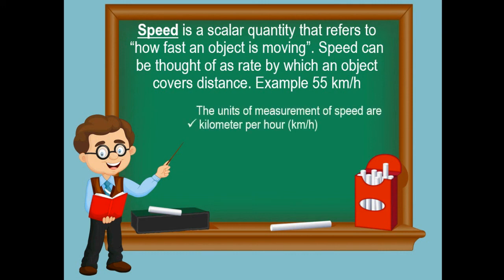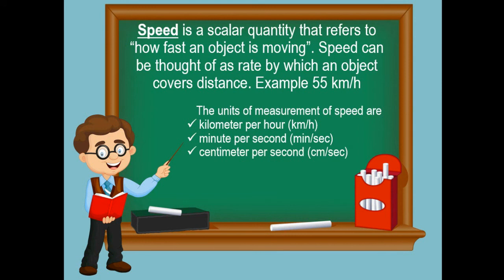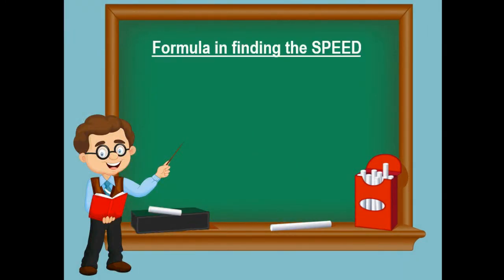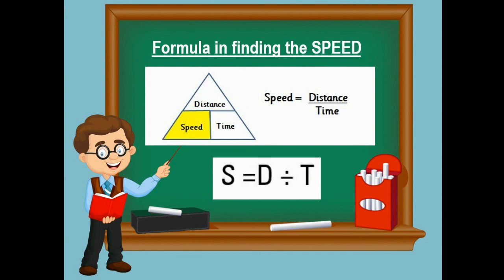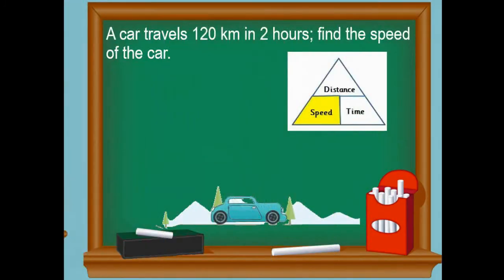...kilometer per hour, minute per second, centimeter per second, millimeter per second. Using this triangle, we arrive at the formula: speed is equal to distance divided by time, or in short, S equals D divided by T.